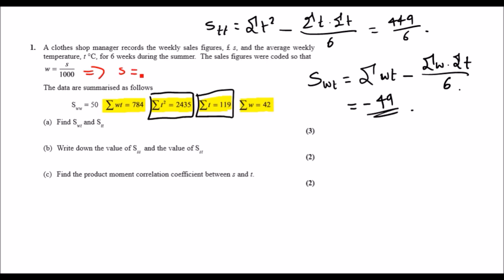First, let's make S the subject here. We should get S equals 1000W. Now one property of SS is that it works like a variance. The sum of squares means we need to find a squared multiplier for this expression. Since we know that SWW here is 50, this SS would be 50 times the square of 1000.